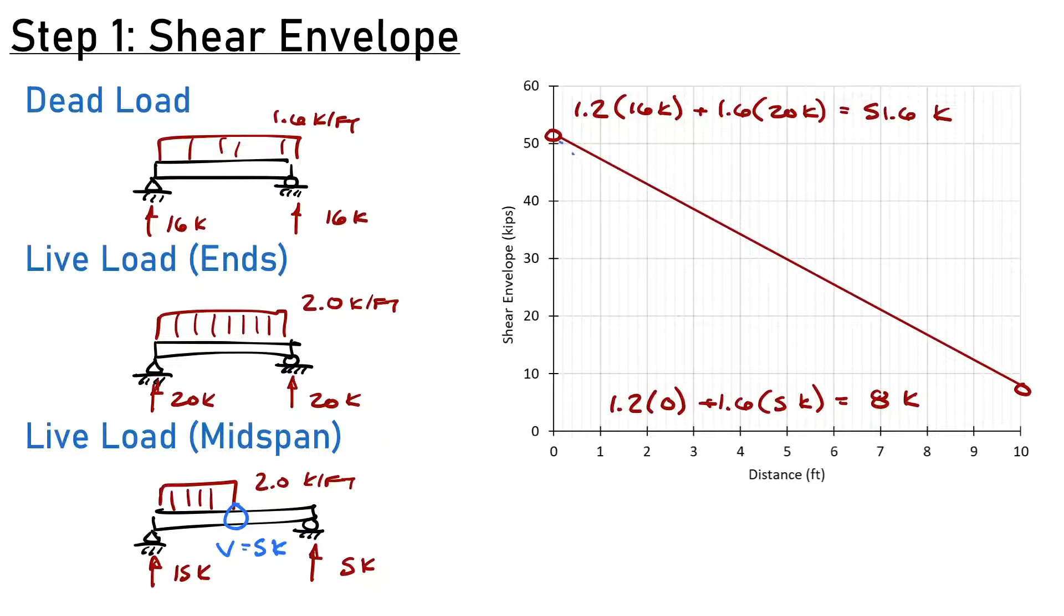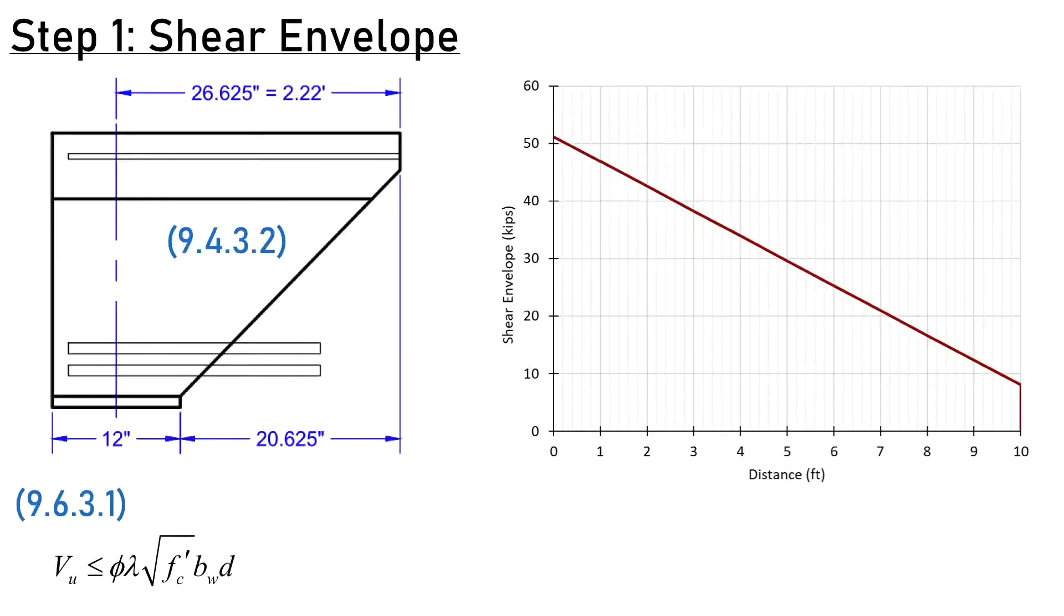In reality, the envelope will curve slightly downward for a simply supported beam, but the straight line is conservative and much easier to deal with. Now that we've done our structural analysis, let's dive into what the code says. My worst shear is 51.6 kips, but that's measured at the center line of my support. In reality, that position is not in shear. The load in this region is just traveling straight down to my support, so I don't need to consider that as load.